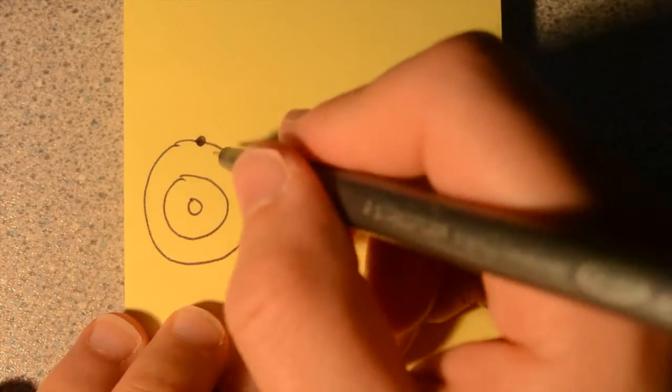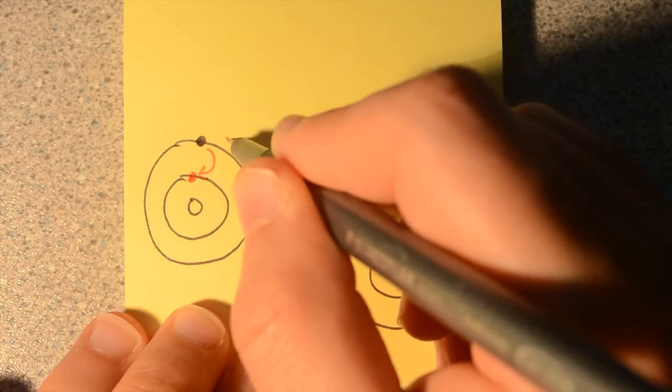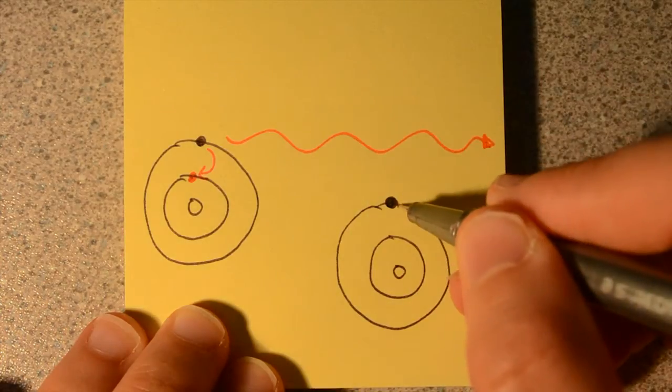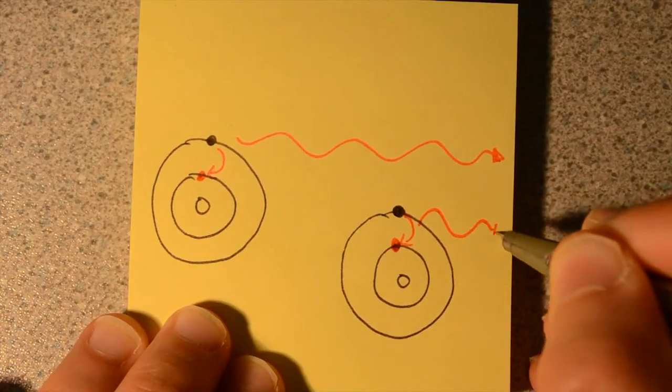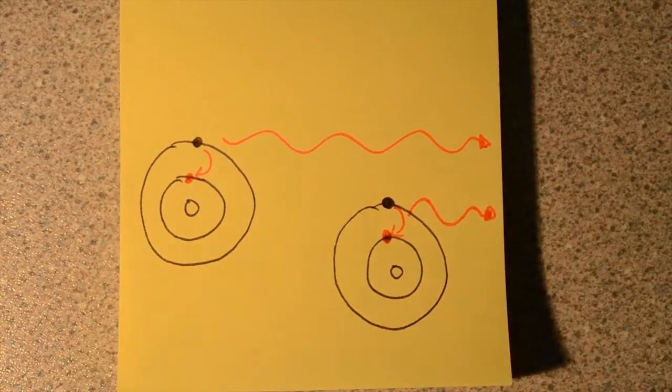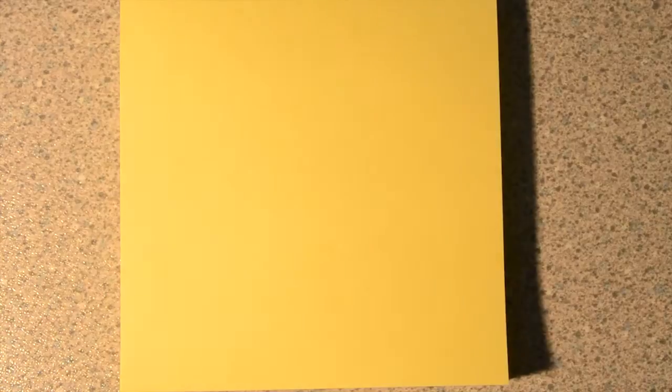Eventually, the excited electron will emit a photon and relax into its original state. And when the emitted photon passes by another excited electron, it stimulates that electron to also emit another photon and relax into its original state.